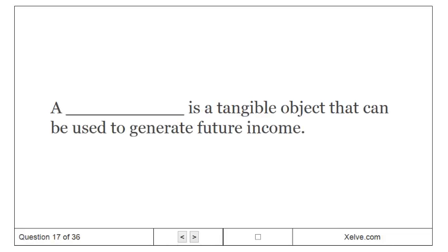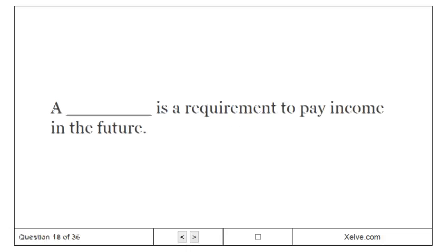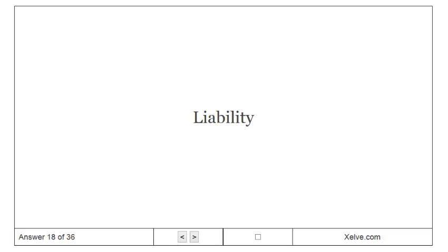A physical asset is a tangible object that can be used to generate future income. A liability is a requirement to pay income in the future.